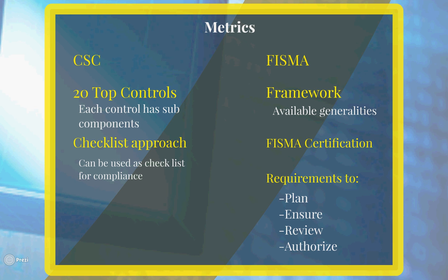FISMA gives you this framework of available generalities. It doesn't really define a checklist — it just gives the generalities of what it should have. It basically requires specific planning for security, ensures appropriate officials are assigned security responsibilities, and requires periodically reviewing the security controls in the information systems program. There's also the authorized system processing prior to operations and periodically thereafter — put a plan in place, ensure someone's responsible, continuously review, and authorize each specific control.